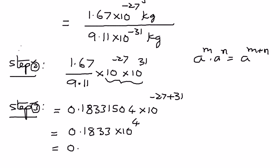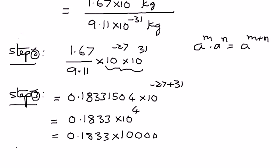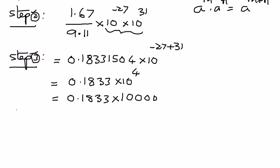This means it is 0.1833 times 1 followed by 4 zeros — that is 10,000. So when we multiply 0.1833 times 10 to the power of 4, or 10,000, this comes out as 1833.